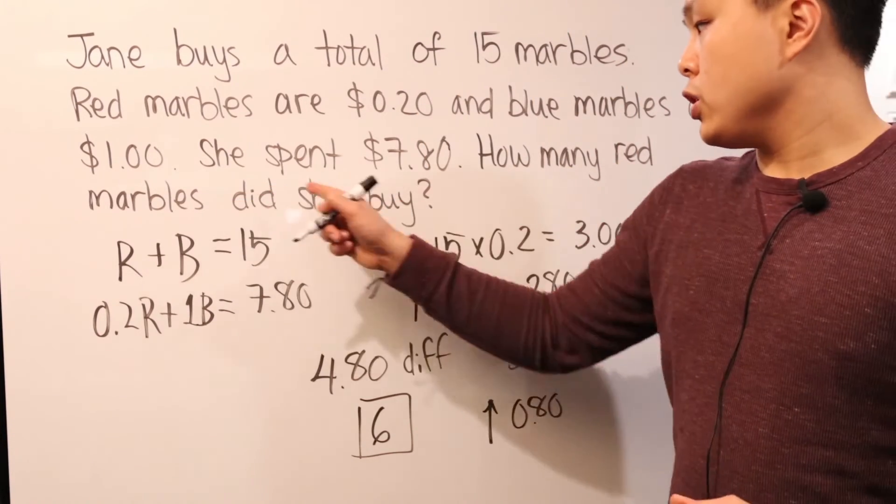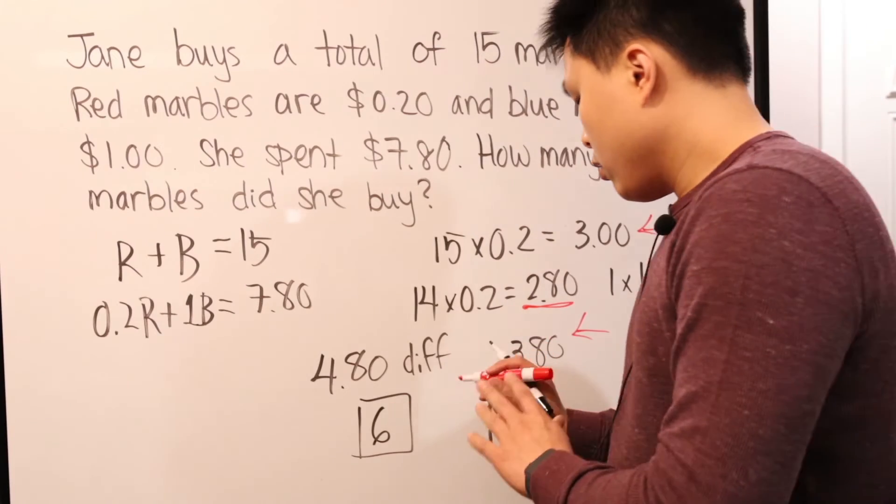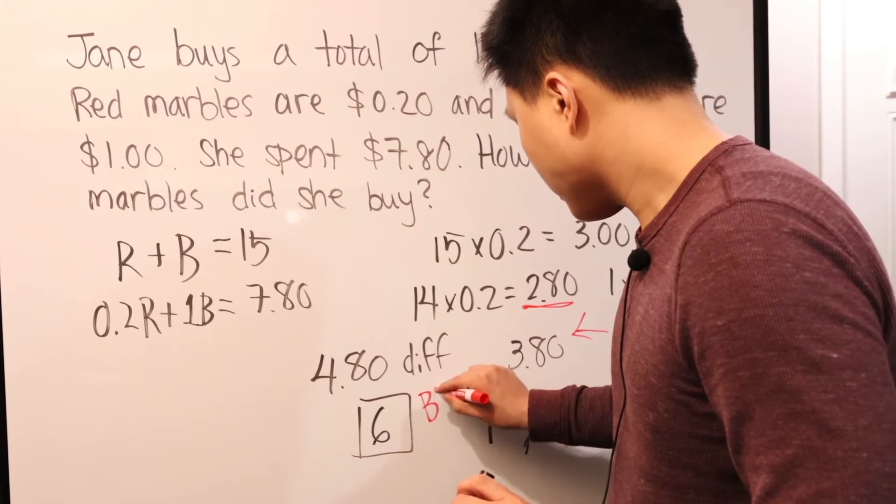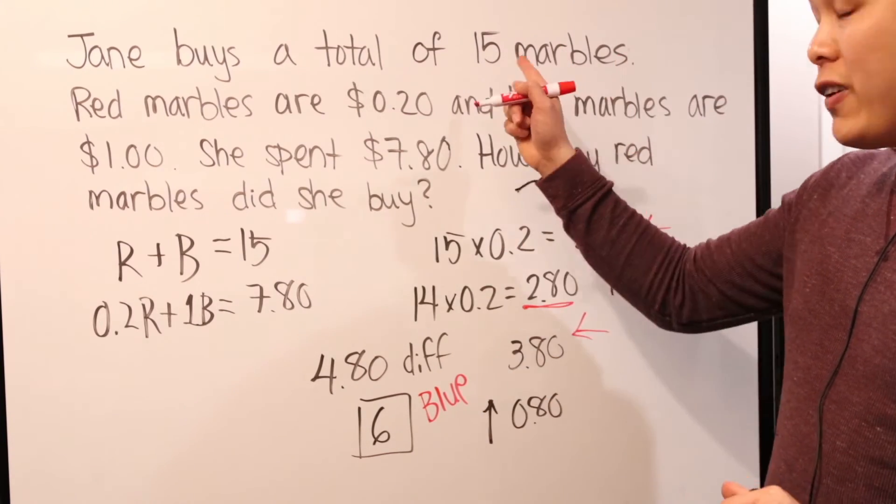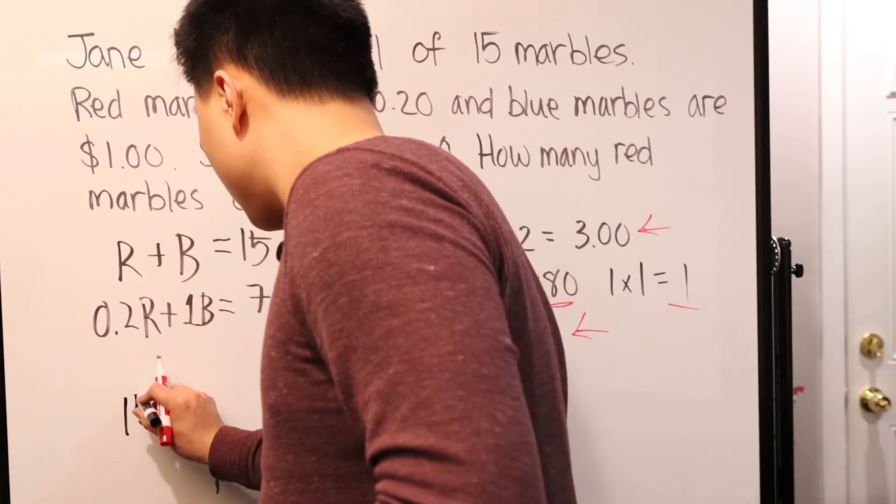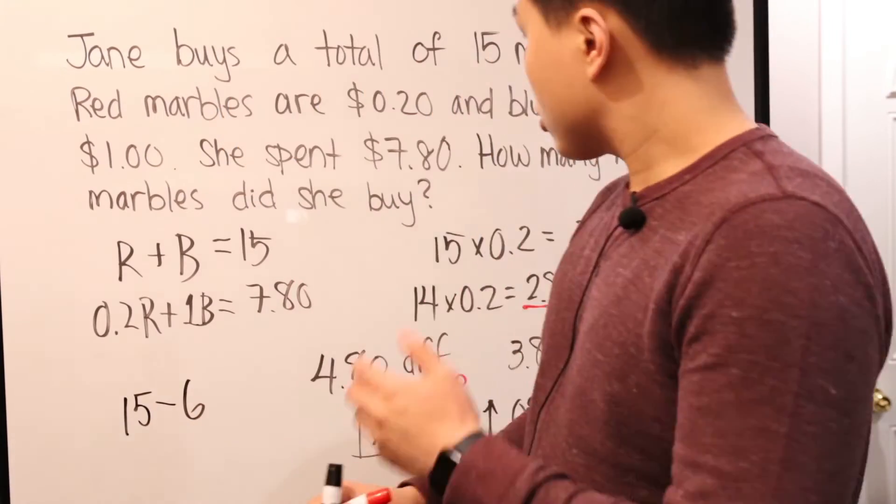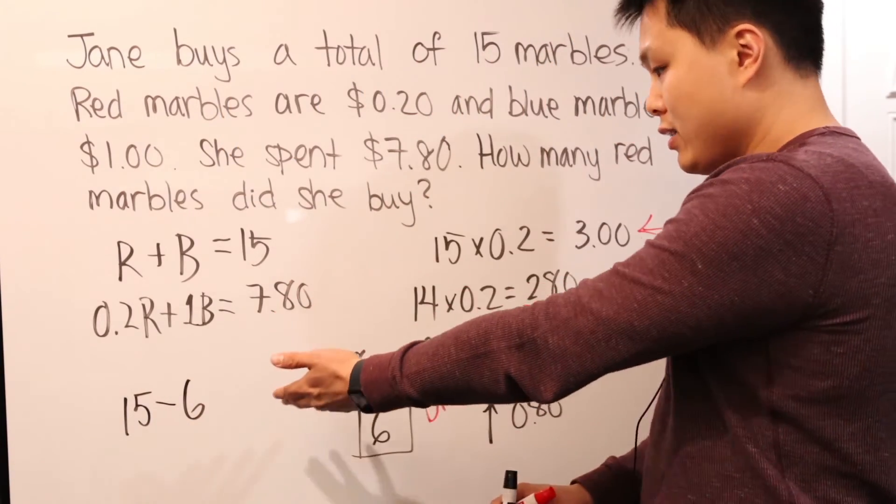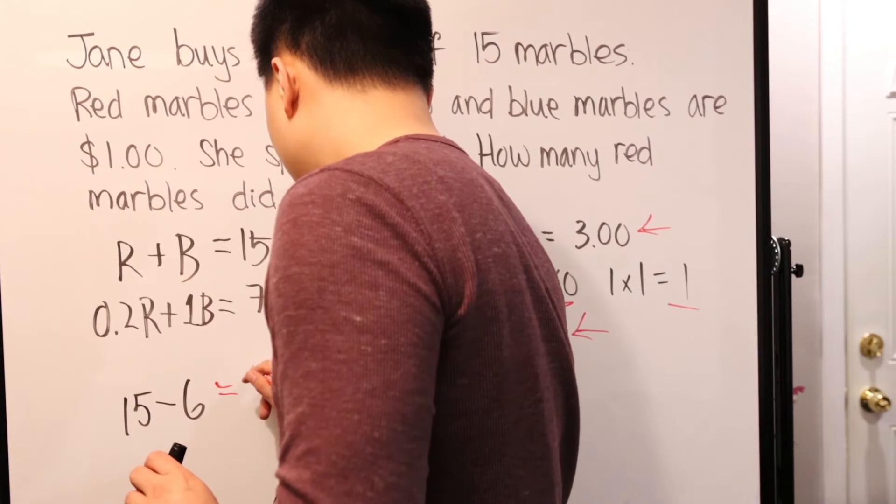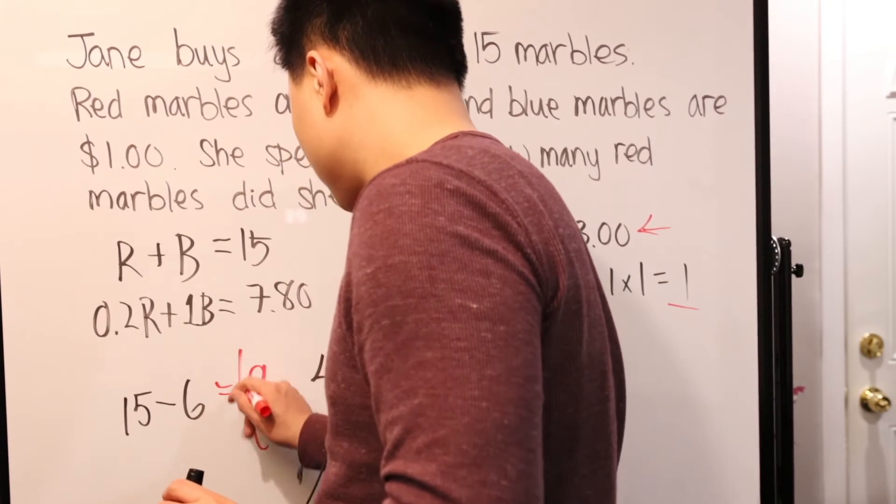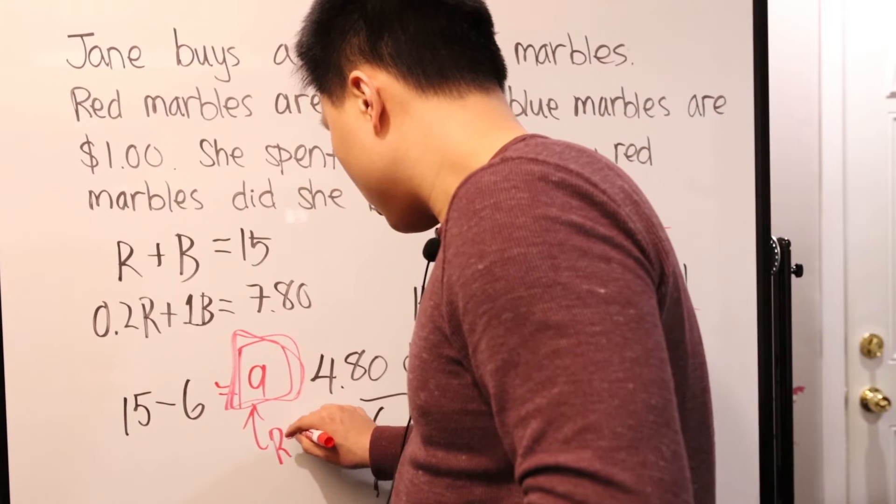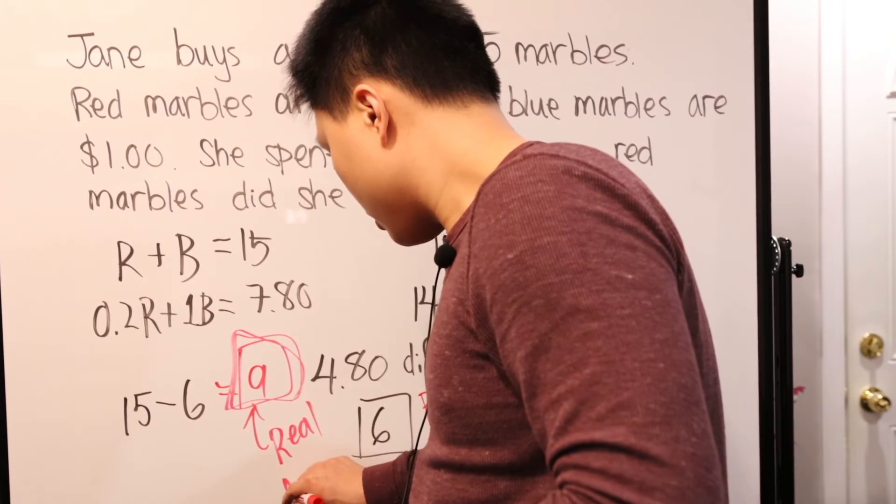How many red marbles did she buy? Well, six, I shouldn't have boxed it because that's not really the answer. Six blue. Well, if that's the case and she bought 15, that means 15 minus six because, well, total number of marbles minus six blue will give us the red marble. And in this case, it's just nine. So this is the actual answer. Let's box this and write real answer right here.